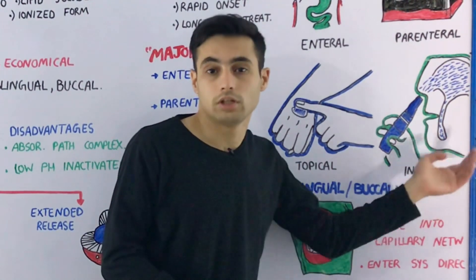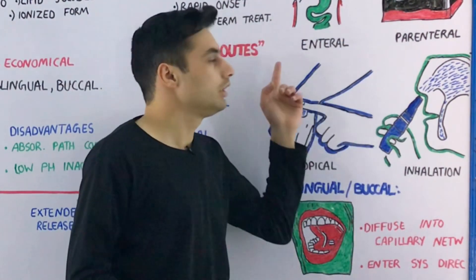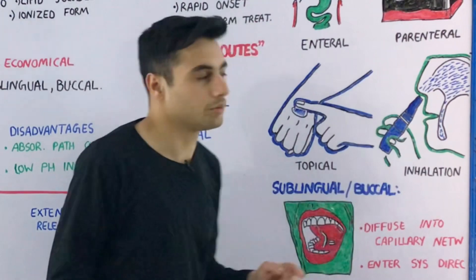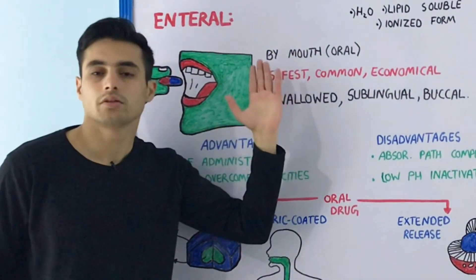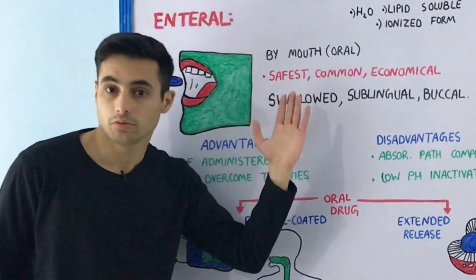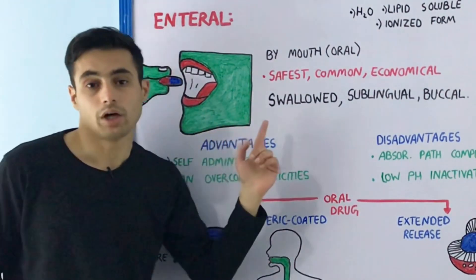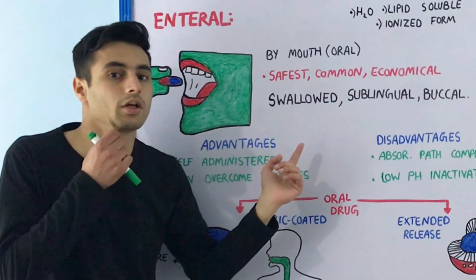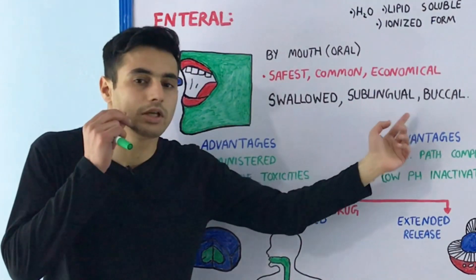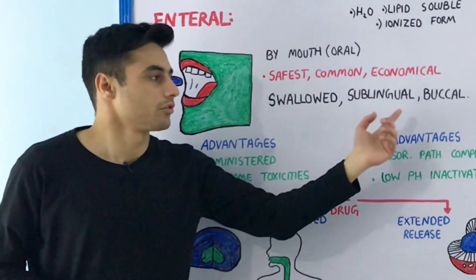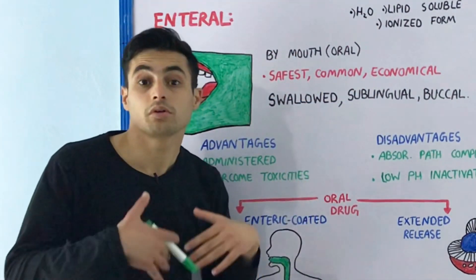Now let's talk in a little more detail about the enteral route of drug administration. Have a look at this diagram. The enteral route consists of the oral, sublingual, and buccal regions. You can take the drug orally through your mouth, put it under your tongue — which is sublingual — or place it in the space between your cheeks and the gum, which is the buccal route.